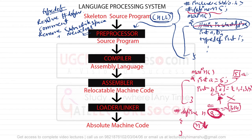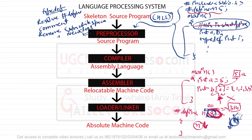This `#define` value does not allocate any memory. When we give the program to the preprocessor, wherever in the program we mention the variable N, before giving it to the compiler, that entire N will be replaced by the value 3.14. So the entire N will be replaced by the value 3.14.